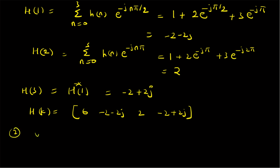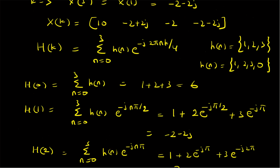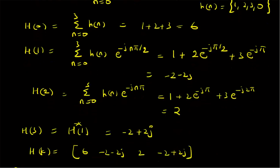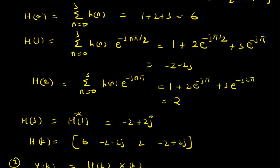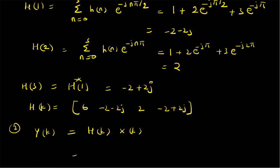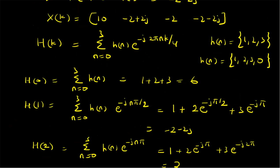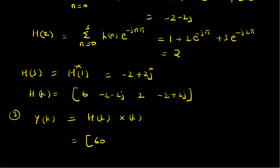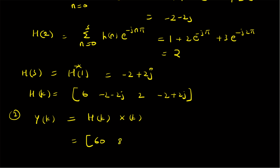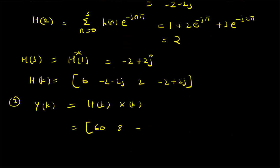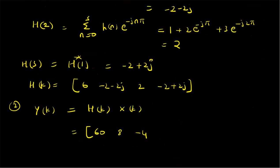The second step is to find Y[k] = X[k] · H[k]. So Y[0] = 10×6 = 60; Y[1] = (−2+2j)(−2−2j) = 4+4 = 8 (conjugate pair); Y[2] = (−2)(2) = −4; Y[3] = (−2−2j)(−2+2j) = 8 again. So Y[k] = {60, 8, −4, 8}.